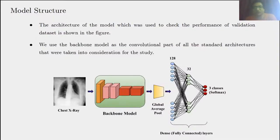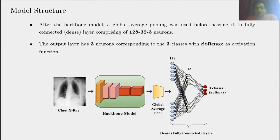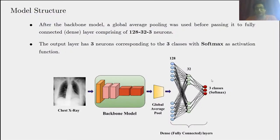The architecture of the model used to check performance on the validation dataset is shown here. We used a backbone model as the convolutional part of standard architectures. After applying the backbone — stripping off the fully connected layer, keeping just the convolutional part — we used global average pooling. Then we used three dense layers of 128, 32, and 3 neurons. The output layer has three neurons corresponding to the three classes with softmax activation.